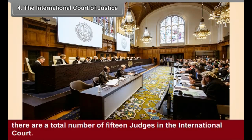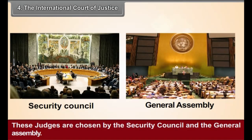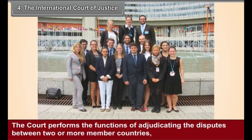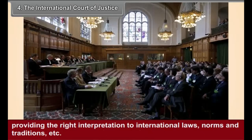The International Court of Justice — Structure: There are a total number of 15 judges in the International Court. These judges are chosen by the Security Council and the General Assembly. Functions: The Court performs the functions of adjudicating the disputes between two or more member countries, and providing the right interpretation to international laws, norms and traditions.